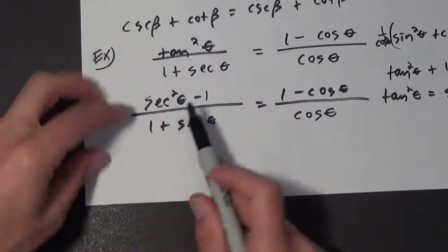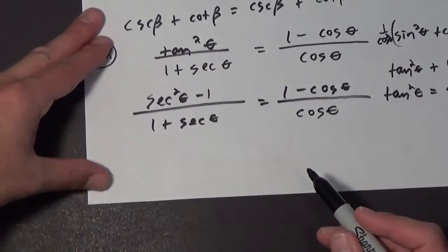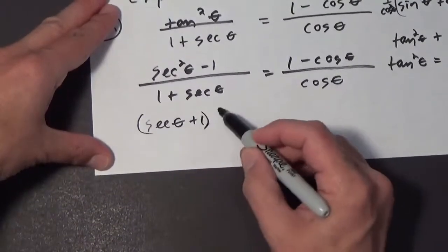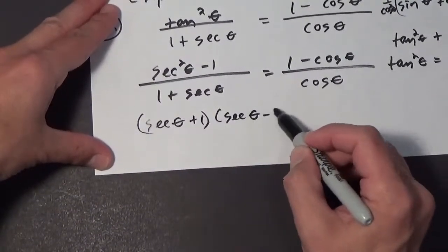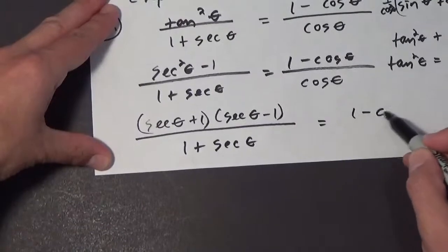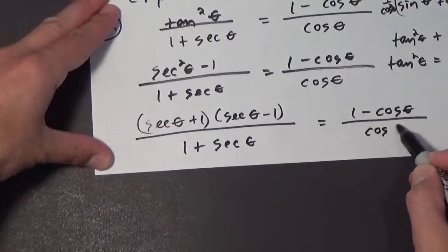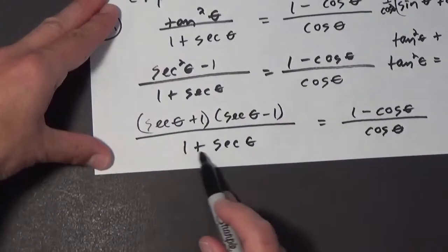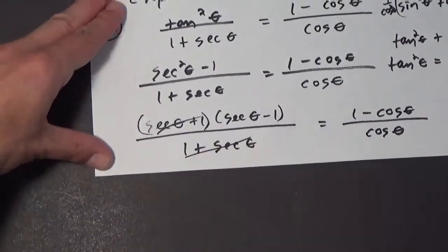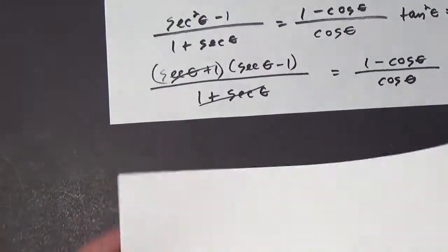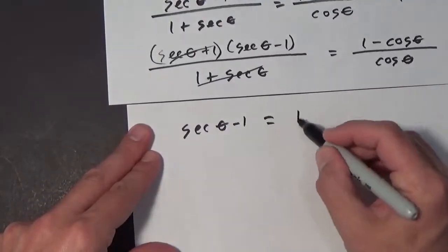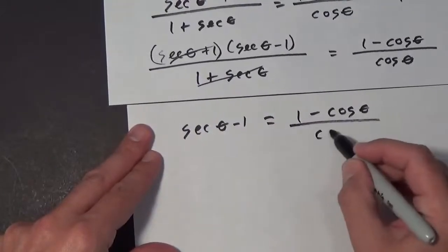Now I'm going to factor this. Secant squared of theta minus 1 factors as the secant of theta plus 1 times the secant of theta minus 1. The (secant of theta plus 1) in the numerator cancels with the (1 plus secant of theta) in the denominator, leaving secant of theta minus 1 equals 1 minus the cosine of theta all over the cosine of theta.